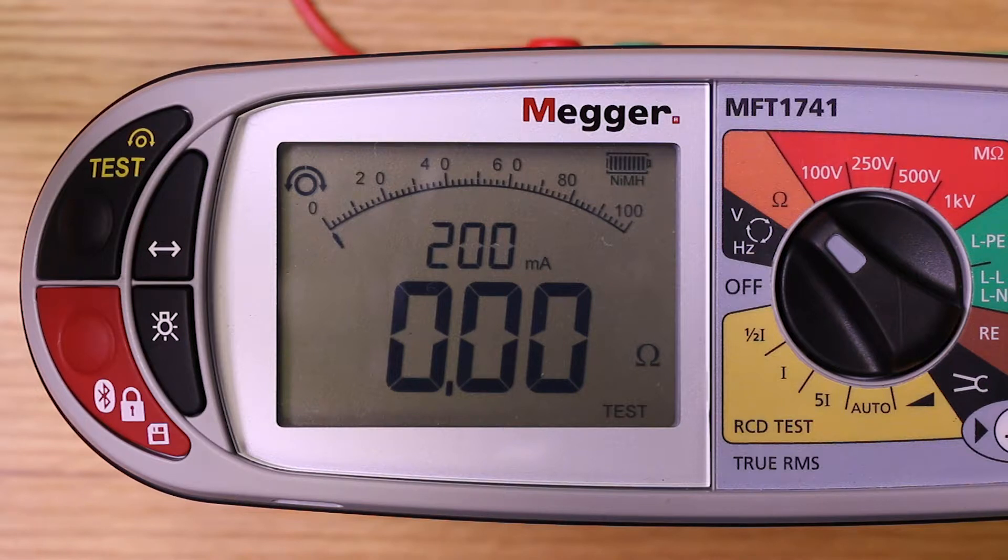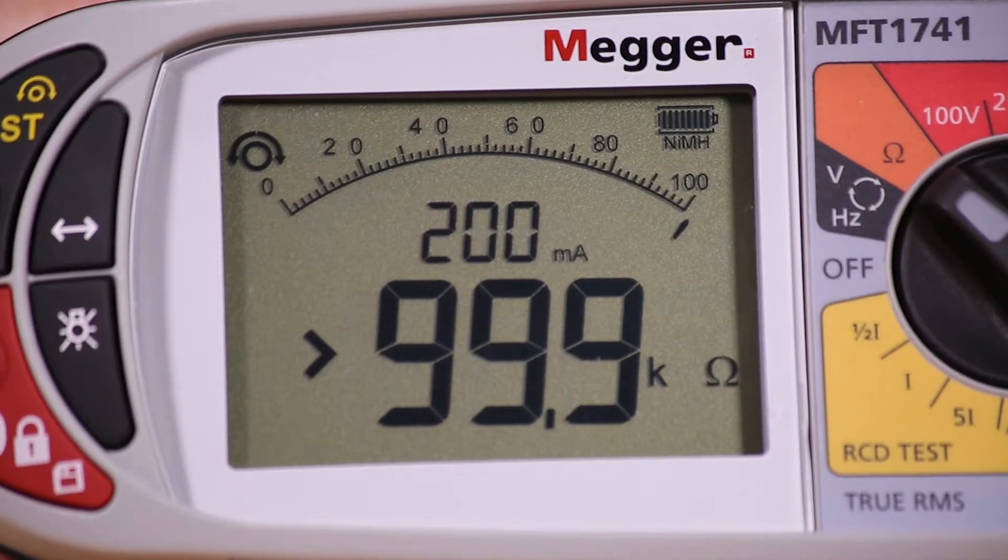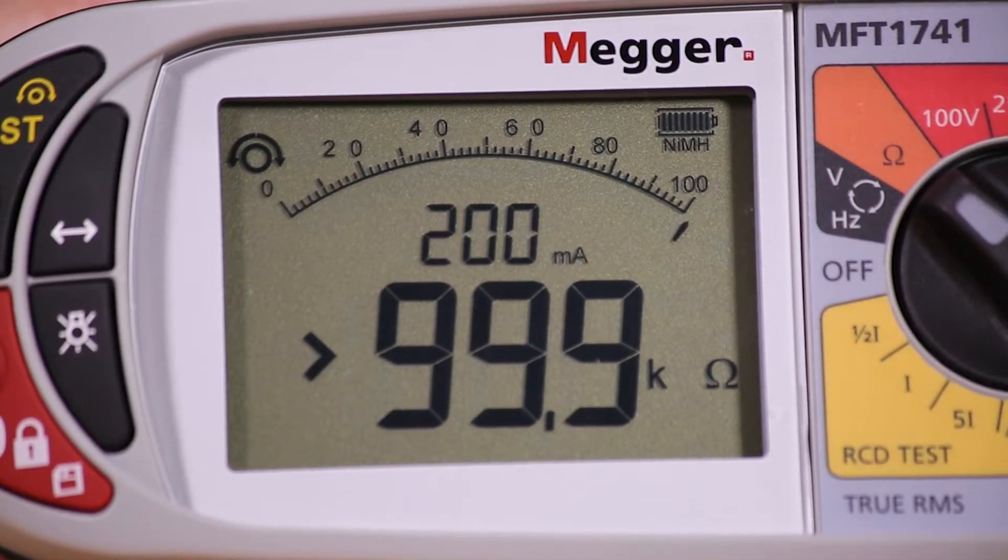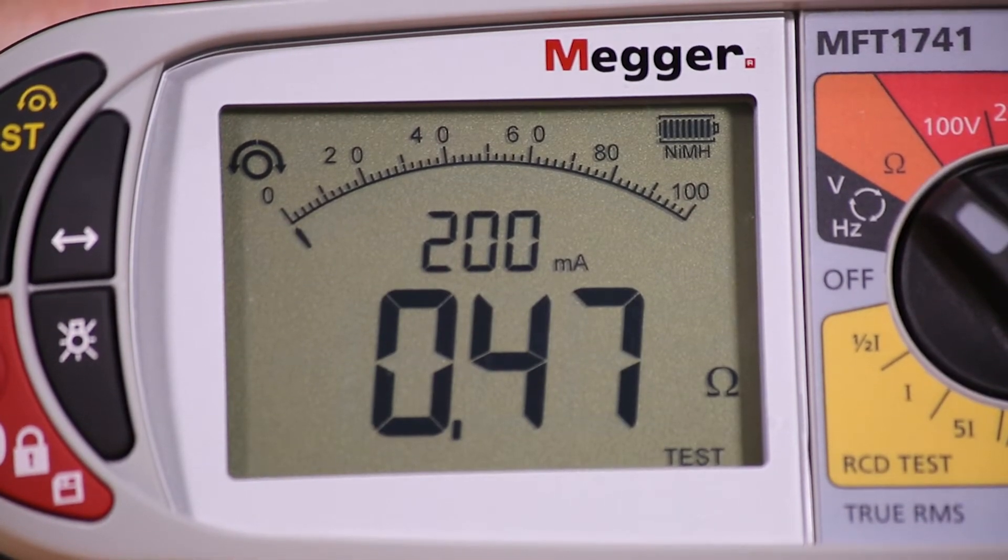Having nulled the leads, we'll now take a straightforward continuity measurement. One of the features on the MFT 1701 series is that it gives an audible indication when you have a stable reading.